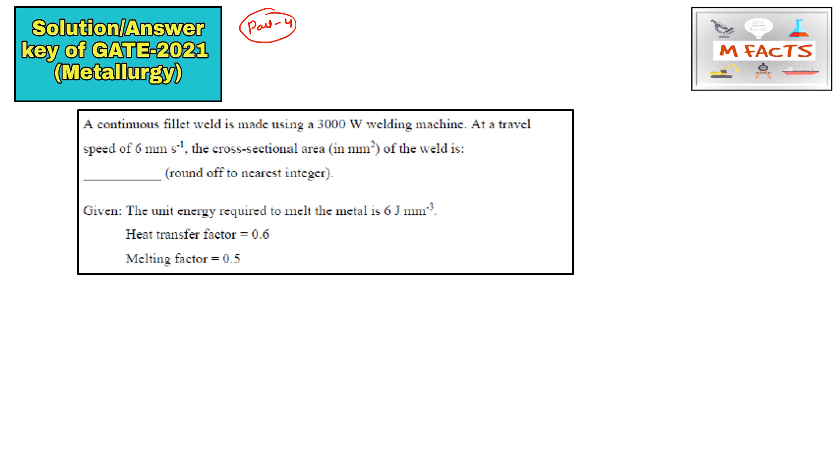This question is from basic welding process. A continuous fillet weld is made using a 3000 Watt welding machine, so the power source is 3000 Watt. You can write the unit as joule per second also. The travel speed is given as v equals 6 mm per second.